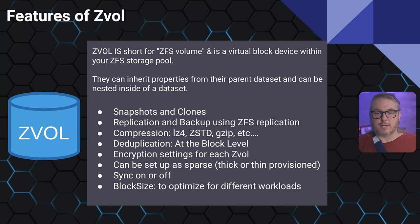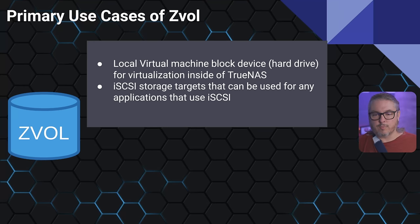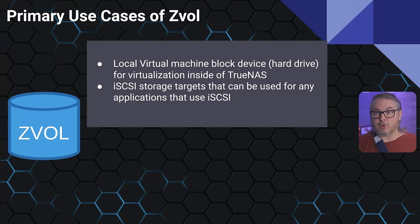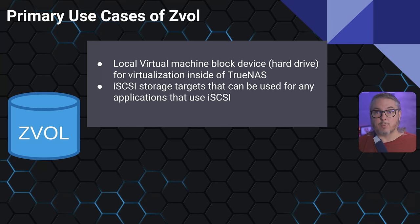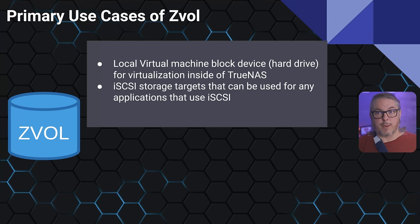You can also set the block size for different workloads — whether it's a database or virtualization — and depending on the software tied to the ZVAL, there may be better optimization for one block size or another. Primarily you'll use ZVALs for local virtual machines, serving as the virtual hard drive for virtualization inside TrueNAS, and for iSCSI storage targets usable by any iSCSI-capable application. For example, presenting as a virtual hard drive to a Windows system works great — it can be formatted in any file system, runs at high speed over 10Gig, and can be expanded later.